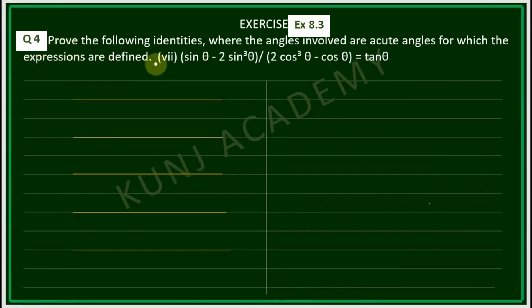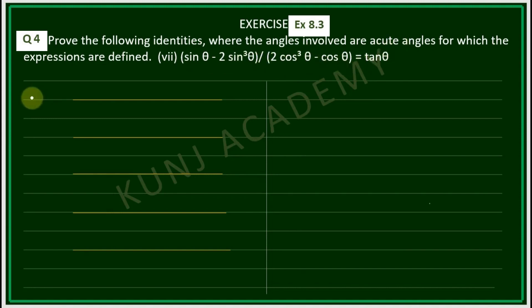Number 7: Prove that (sinθ - 2sin³θ) upon (2cos³θ - cosθ) is equal to tanθ. Left hand side.